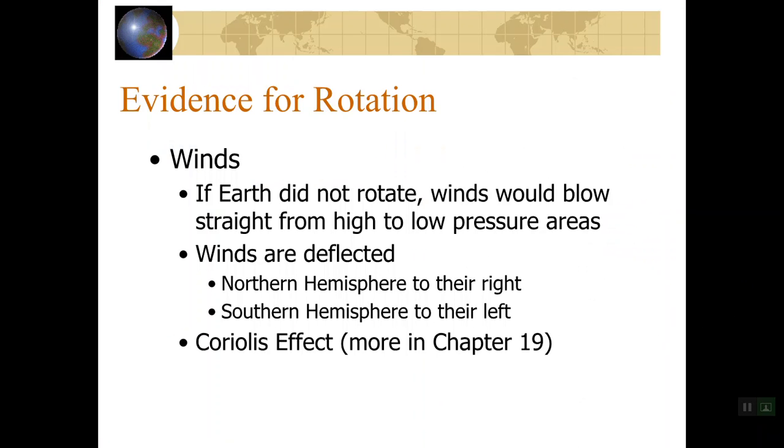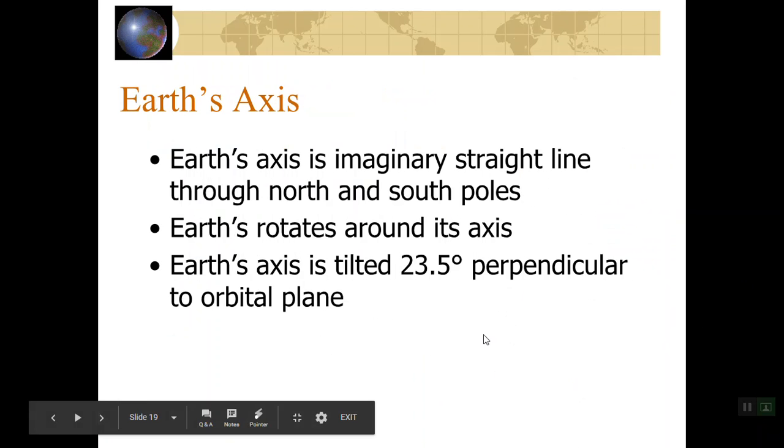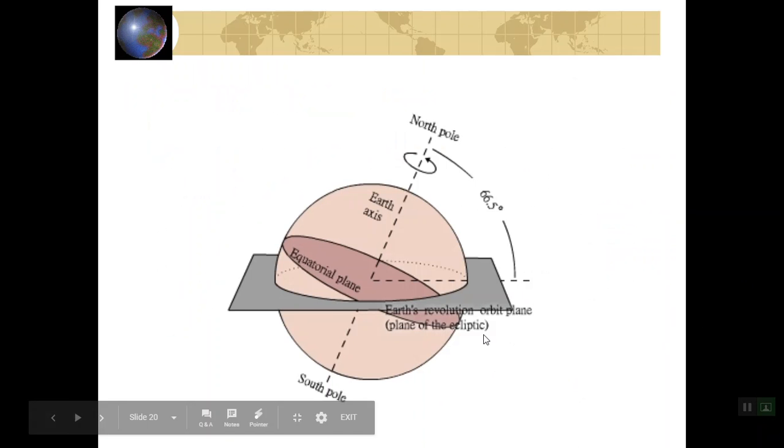Also, our winds rotate. It's called the Coriolis effect. If Earth wasn't rotating, then our winds wouldn't be deflected like they are in the Northern Hemisphere to the right and Southern Hemisphere to the left. Earth's axis is an imaginary straight line through the North and the South Poles. Earth rotates around its axis. Earth's axis is tilted 23.5 degrees perpendicular to the orbital plane. So that happened when Earth was hit by a large object early on in Earth's life. And you can see that here. So this line that looks like a piece of paper cutting through Earth, that's the orbital plane. And then you can see Earth's North Pole is tilted. And it's tilted 23.5 degrees from straight up and down.